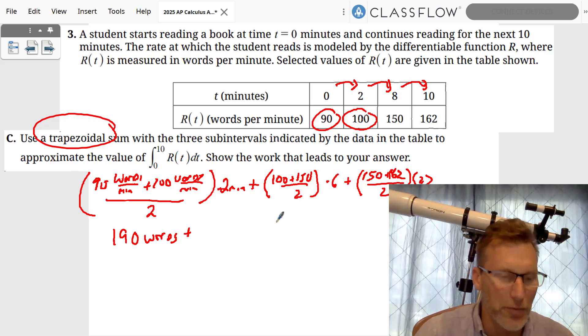Okay, 100 and 150 is 250, divided by 2 times 6, which is really multiplying by 3—that's 750 words. If we add all that up, then 150 and 162, we add that up, divided by 2 times by 2, those cancel out, and that ends up giving me 312 words.